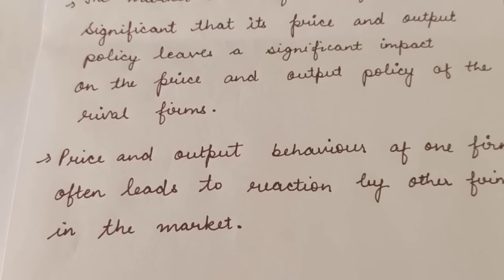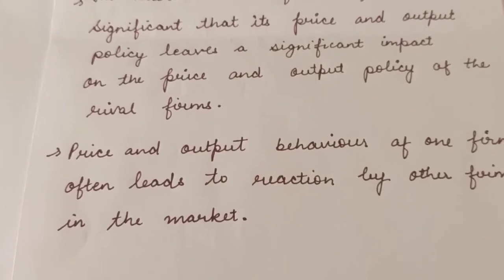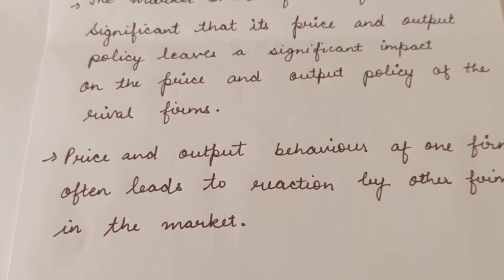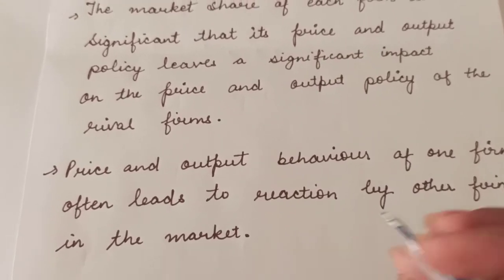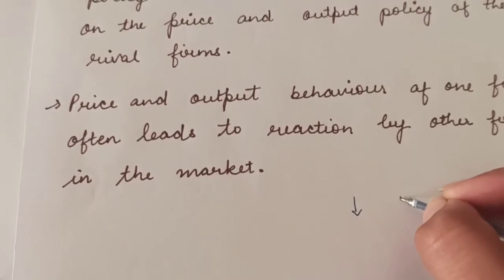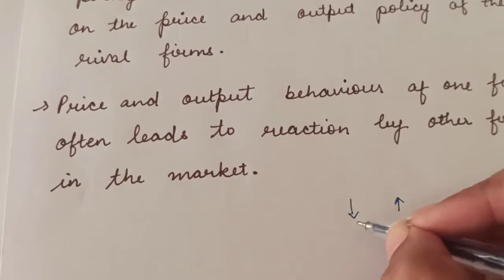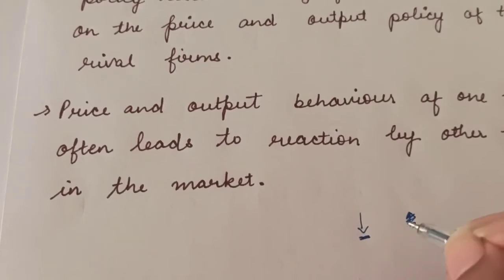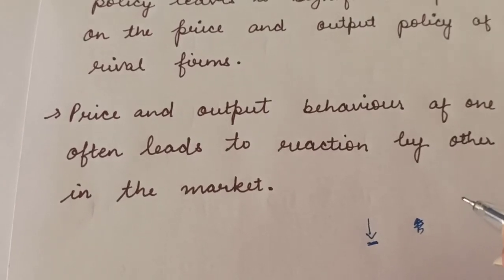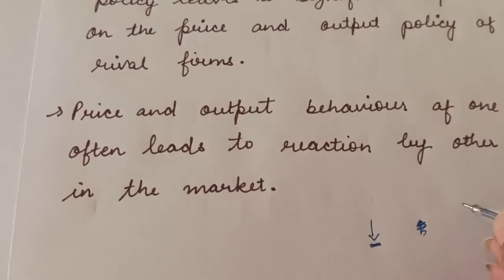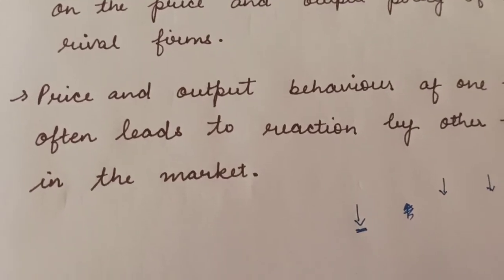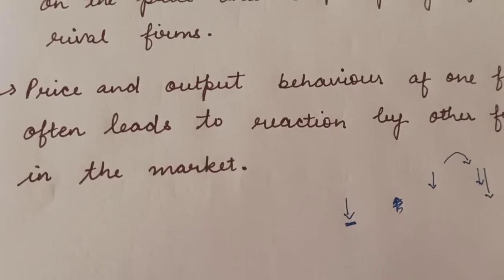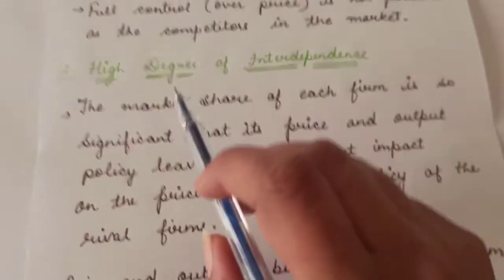Price and output behavior of one firm often leads to reaction by other firms. It means that a firm may not be willing to raise the price of its product, fearing that a rival firm may not raise it and buyers would shift to the rival firm. If a firm lowers the price and rival firms do not change their price, then that firm can attract buyers. But if rival firms also lower the price, then buyers may shift to the rival firm that is lowering more. That is why in such a market there is a high degree of interdependence.